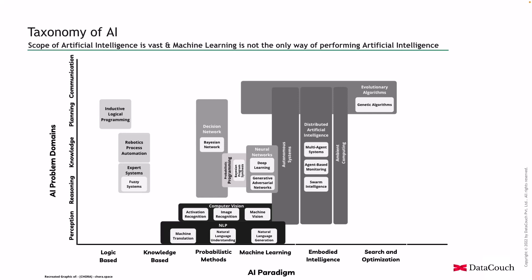On the y-axis, the AI problem domains include: perception — the ability to transform raw inputs like sound and images into usable information, converting unstructured data to structured data. Then reasoning — the capability to solve a problem. Then knowledge — the ability to represent and understand the world. And planning — setting and achieving goals.